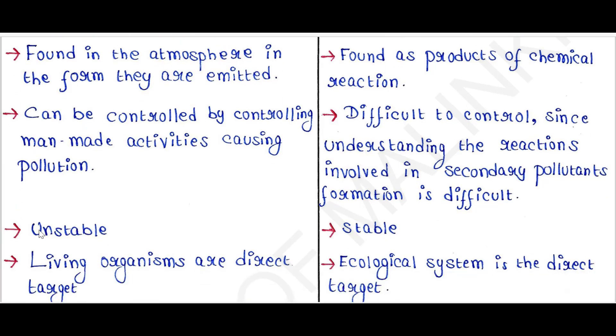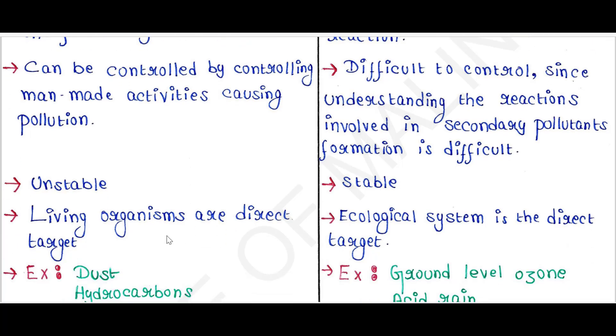Primary pollutants are unstable. Secondary pollutants are stable. Living organisms are direct targets of primary pollutants. Ecological systems are the direct targets of secondary pollutants.